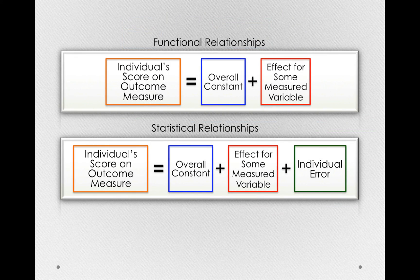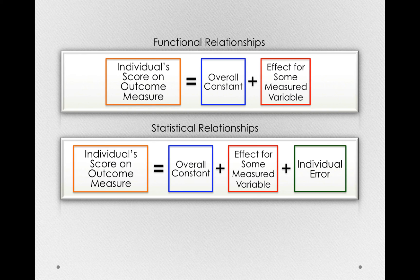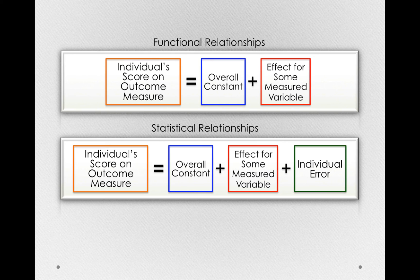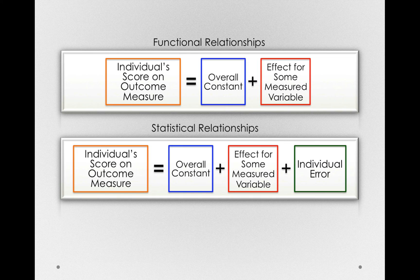So we've seen two different types of models we can use to describe observations we make. Functional models, or functional relationships, where we actually know all the different things that are contributing to the outcome measure. In those models, there isn't individual error. You might recall, when we looked at the cost of laundry or the cost of going to that nightclub, there was no differences among people at the different levels of whatever our explanatory variable was. We were able to model the exact functional relationship.